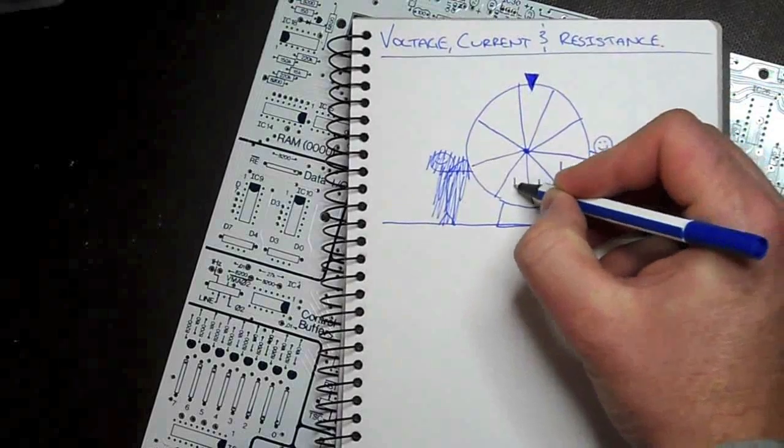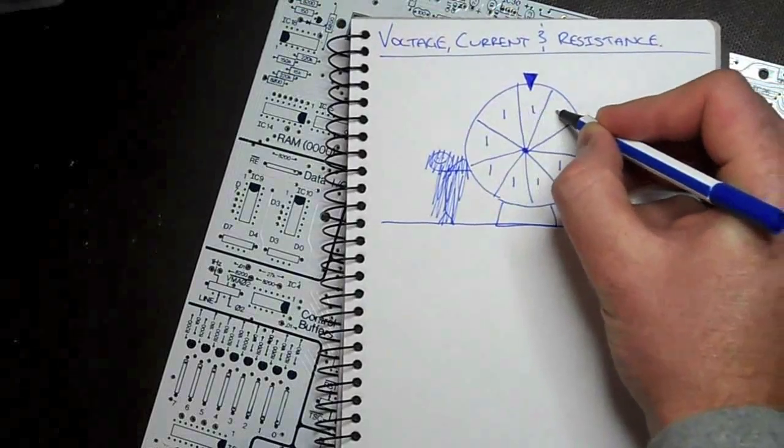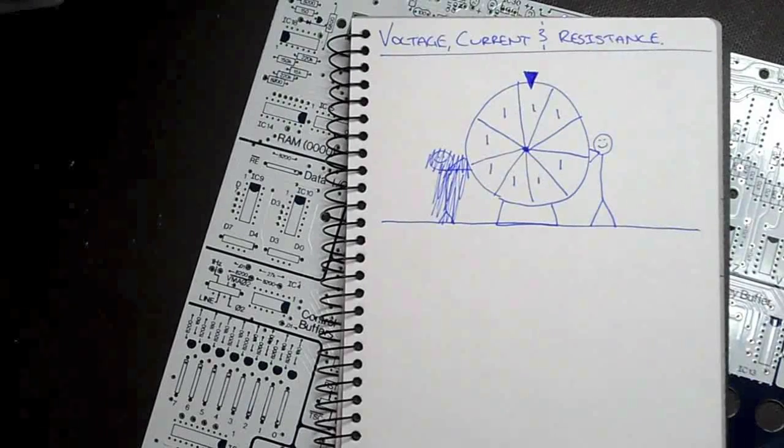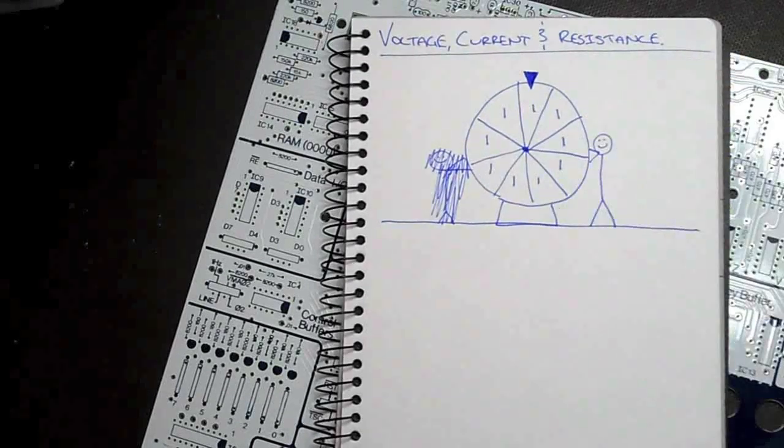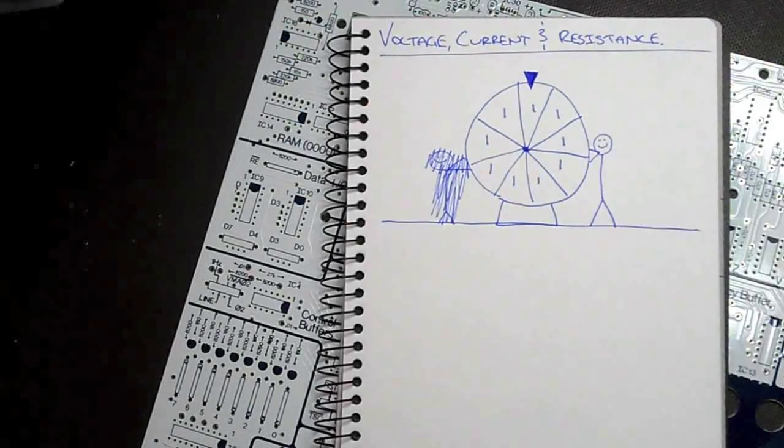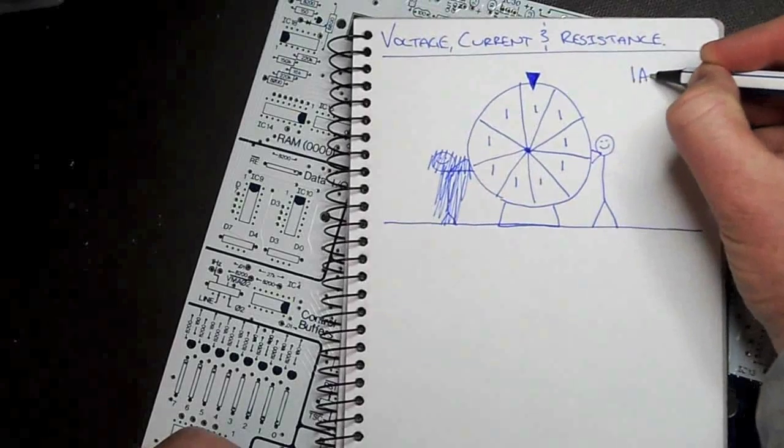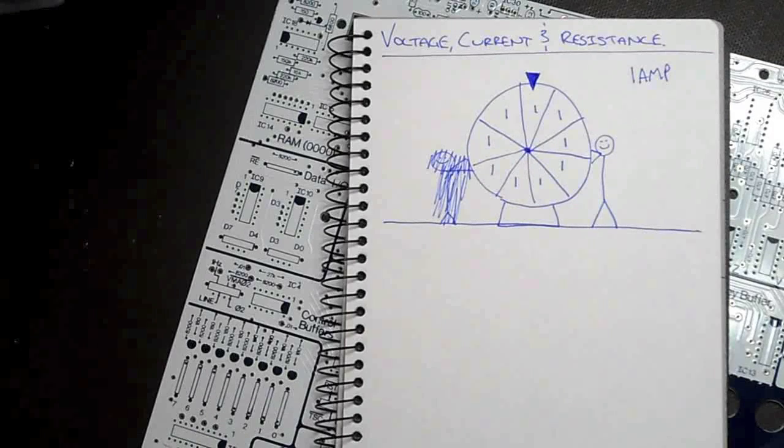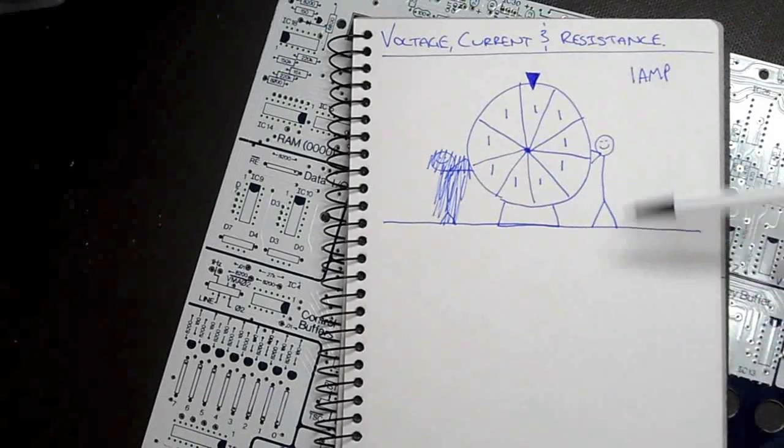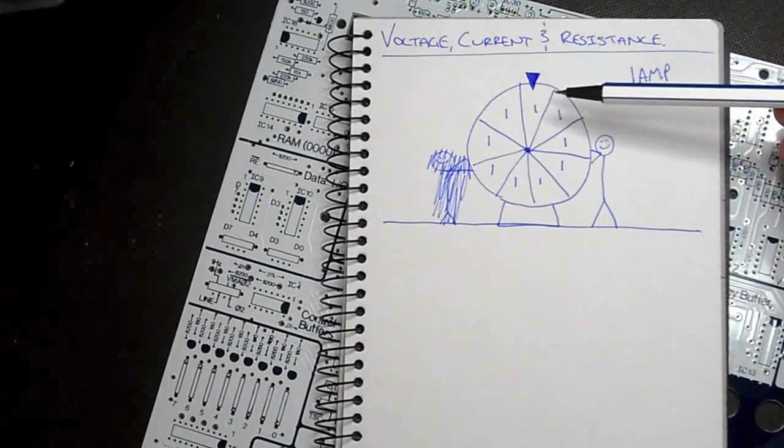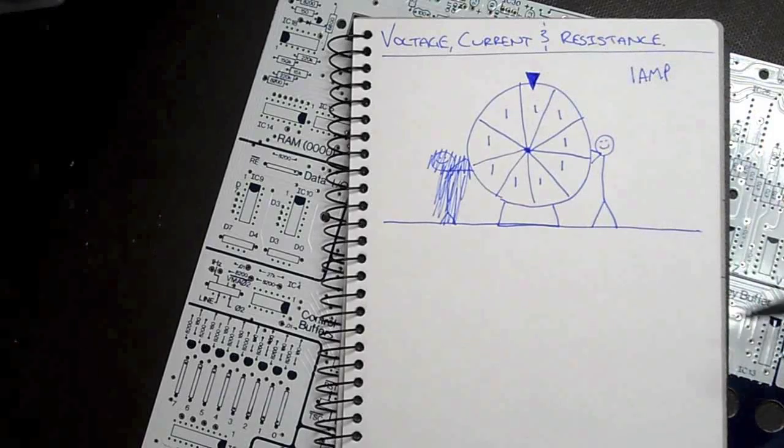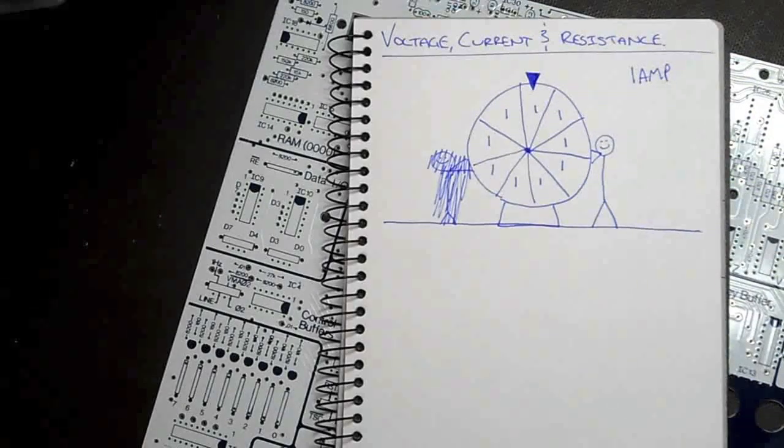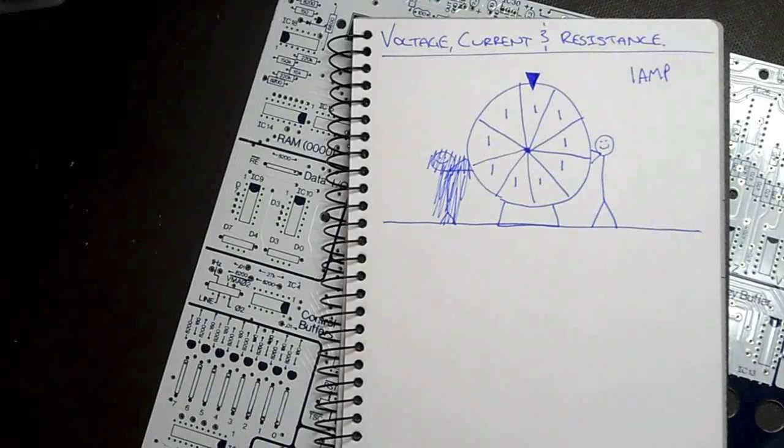Alright, let's now say that each one of these segments has one coulomb of charge. Current is measured in amps. One amp is defined as when one coulomb of charge passes a certain point in one second. That is one amp.